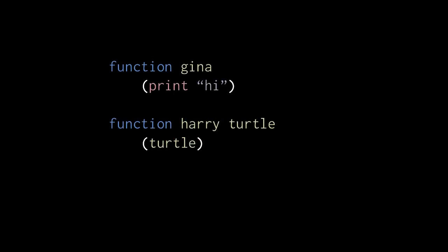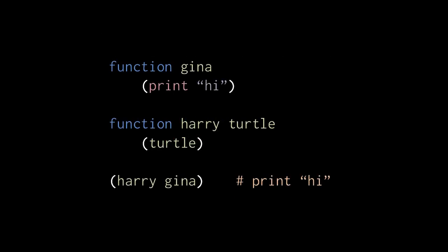Or say I might have another function harry with one parameter turtle, which it invokes as a function. So if I call harry with the argument gina, gina gets passed to turtle, and so when turtle is invoked, gina gets invoked, printing hi.